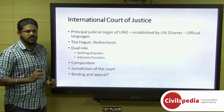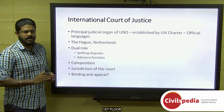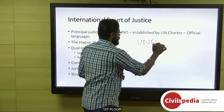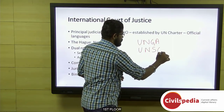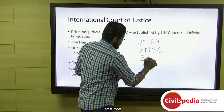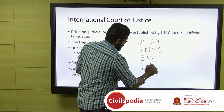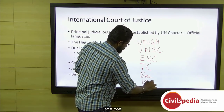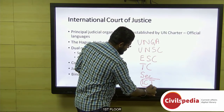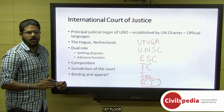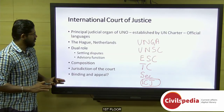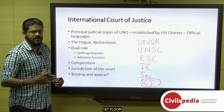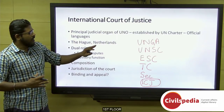There are six principal organs of the United Nations Organization: the UN General Assembly, the UN Security Council, the UN Economic and Social Council, the Trusteeship Council, the Secretariat, and the International Court of Justice. The ICJ is the principal judicial organ of the United Nations, established by the UN Charter in 1945 and beginning its work in 1946.